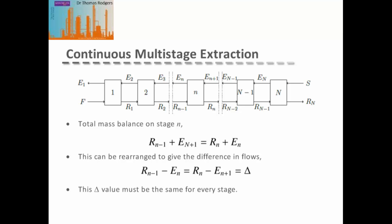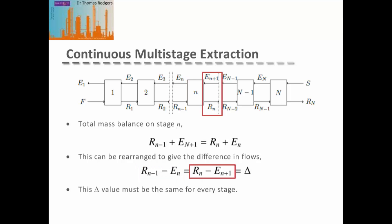We can rearrange that mass balance to give what's called the difference in flows. This is the difference in the flow entering and leaving stage N to the stage below. From our mass balance, we can see that these two differences must be equal to each other, which we refer to as delta. This value of delta must be the same for every stage in our extraction system.